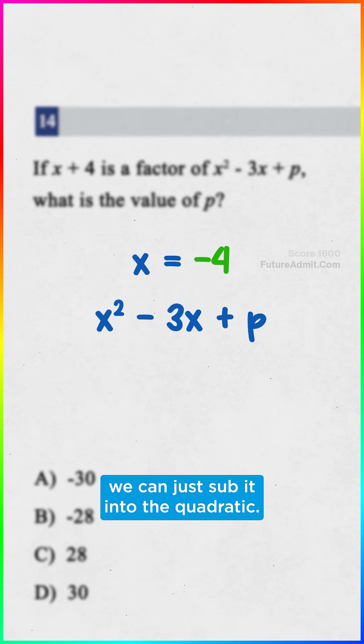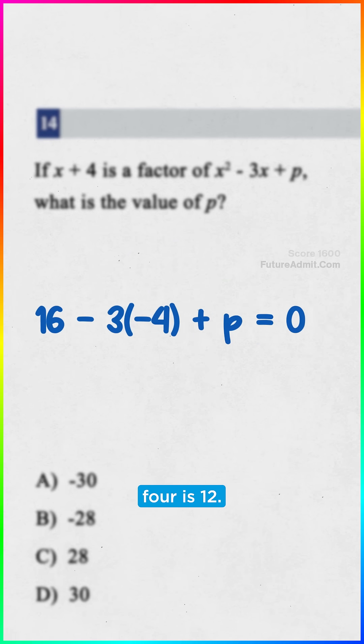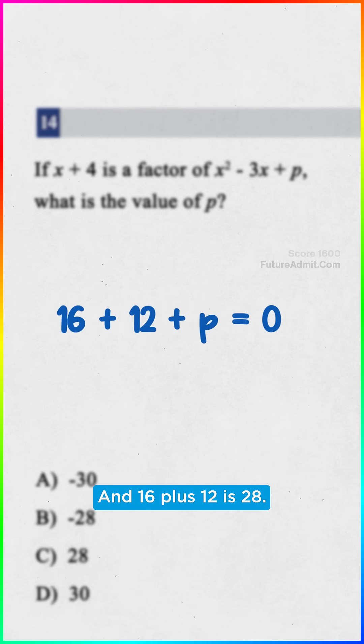So now that we know x, we can just sub it into the quadratic. Negative 4 squared is 16. Negative 3 times negative 4 is 12. And 16 plus 12 is 28.